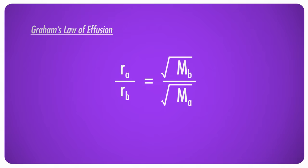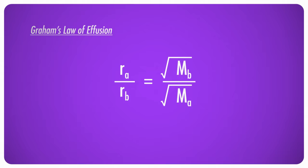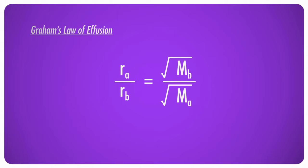Thomas Graham measured the rates of effusion for various gases, and his results fit perfectly with what we already know: the more massive a gas is, the more slowly it moves. From his observations, Graham developed a formula now known as Graham's Law of Effusion for comparing the rates of effusion of different gases. It states that under identical conditions, the ratio of the rate of effusion of gas A to the rate of effusion of gas B equals the ratio of the square root of the molar mass of gas B to the square root of the molar mass of gas A. The rate of motion of a gas is inversely proportional to the square root of its mass.